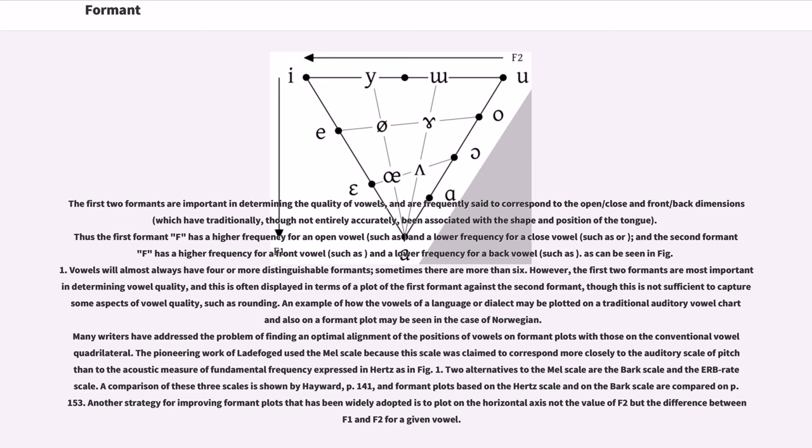Many writers have addressed the problem of finding an optimal alignment of the positions of vowels on formant plots with those on the conventional vowel quadrilateral. The pioneering work of Ladefoged used the Mel scale because this scale was claimed to correspond more closely to the auditory scale of pitch than to the acoustic measure of fundamental frequency expressed in hertz as in figure 1.